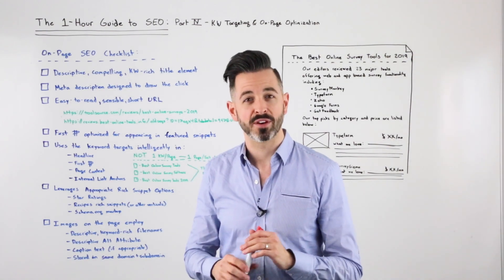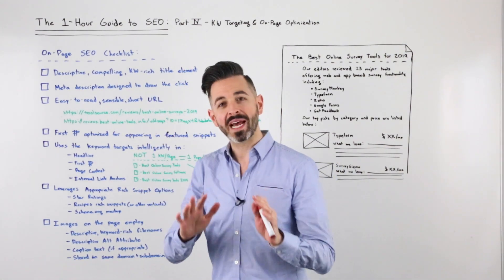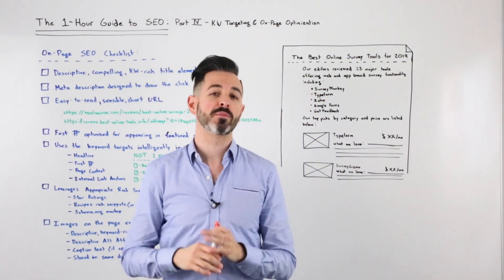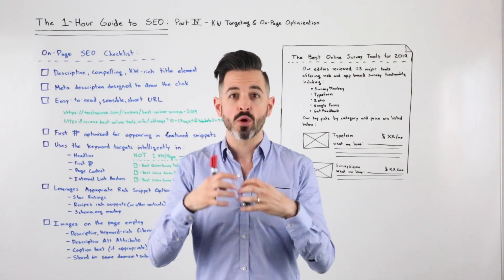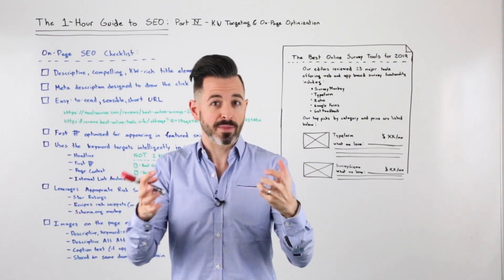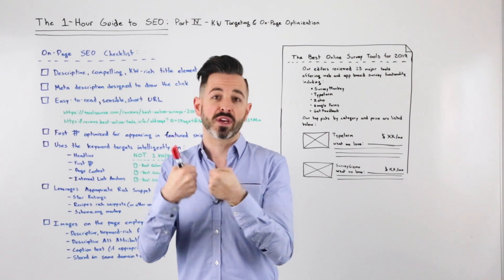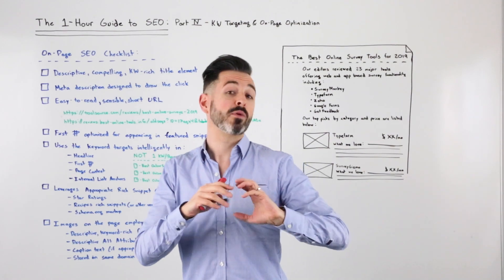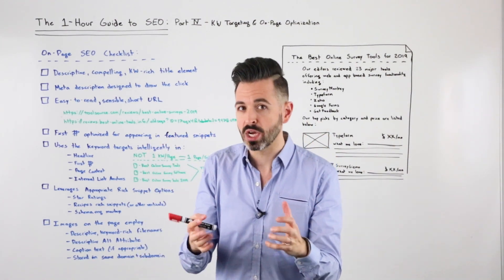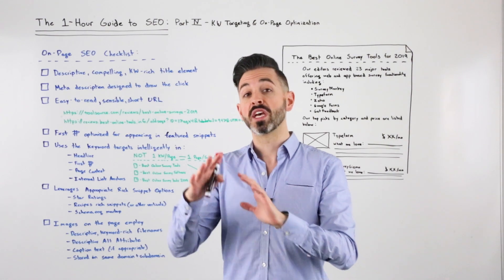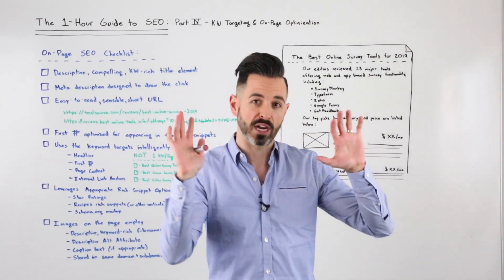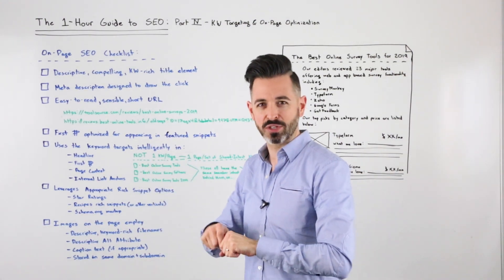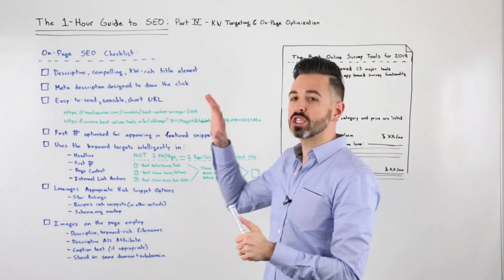Howdy Moz fans, welcome to another edition of our special one-hour guide to SEO. We are now on part four: keyword targeting and on-page optimization. Hopefully you've watched part three where we talked about searcher satisfaction, how to make sure searchers are happy with the page content and user experience you build for them, as well as part two on keyword research. And now we're into on-page SEO.